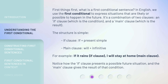First Things First — What is a First Conditional Sentence? In English, we use the First Conditional to express situations that are likely or possible to happen in the future. It's a combination of two clauses: an IF clause, which is the condition, and a MAIN clause, which is the result.